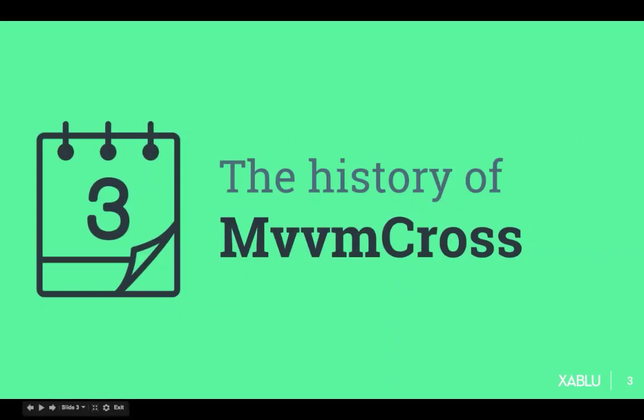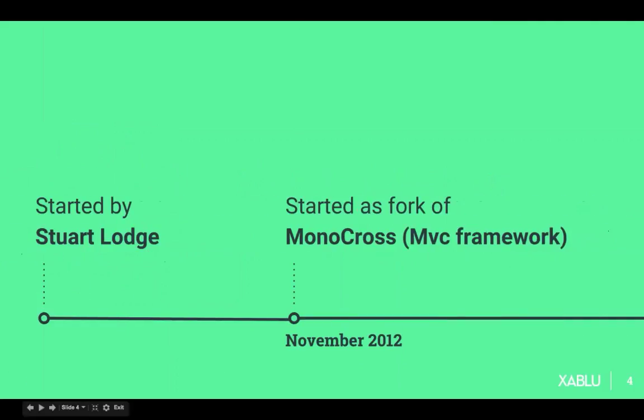When we look at the history of MvvmCross, we start off with the guy who started the project, Stuart Lodge, from England. He started MvvmCross as a fork of MonoCross, which is an MVZ framework, and that was in 2012. He started this as a brand new project in MVVM instead of MVZ, but based on MonoCross.